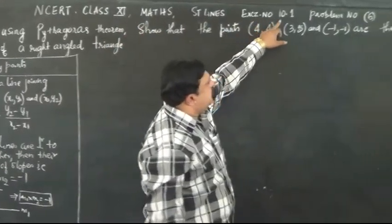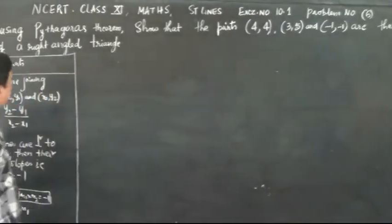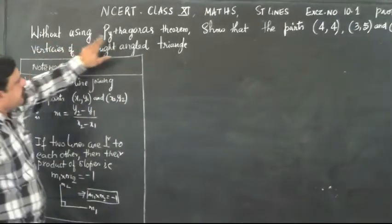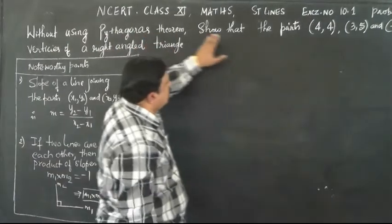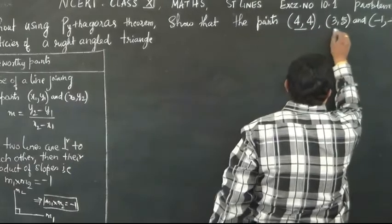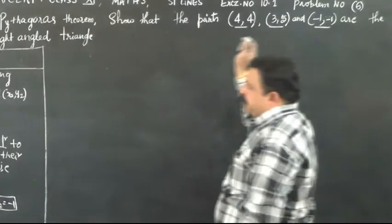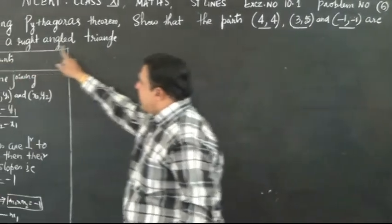Straight lines exercise number 10.1, problem 6. The problem says, without using Pythagorean theorem, show that the points (4,4), (3,5), and (-1,-1) are the vertices of a right-angled triangle.